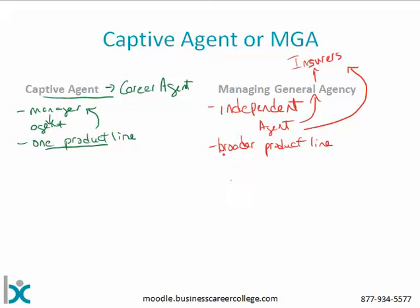The trade-off is that this person typically has less support. Some MGAs offer a substantial amount of support and some really just process business — this varies quite a bit across the industry. If you're coming into the business, you'll figure out where your best fit is.